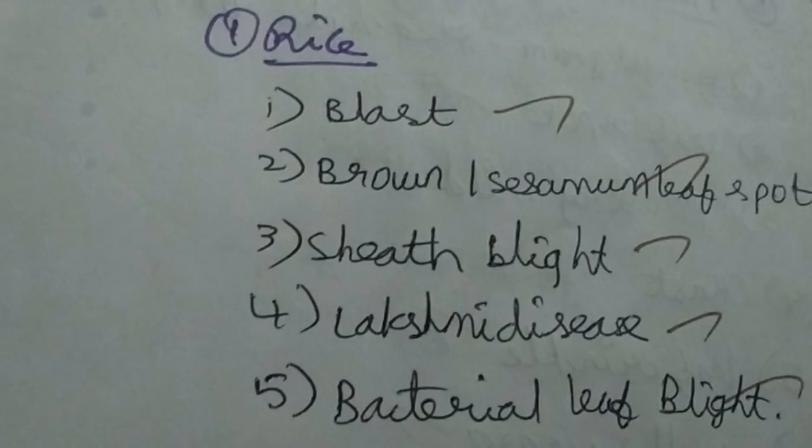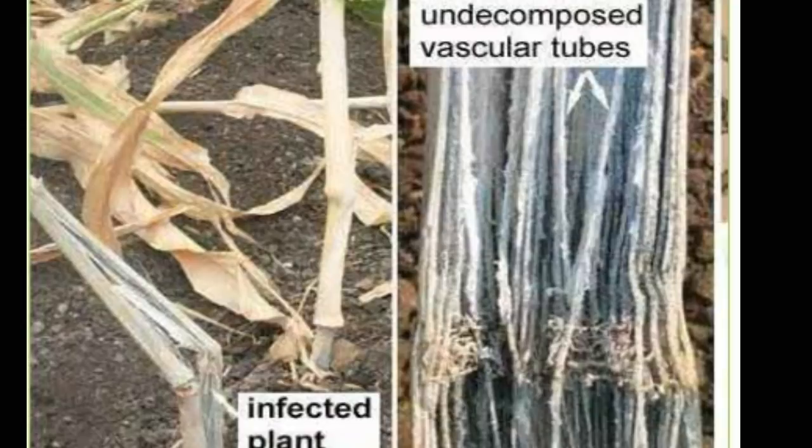In bacterial leaf blight, the leaves show characteristic symptoms — the leaves turn the same color throughout. This is bacterial leaf blight. Next is charcoal rot. In charcoal rot, when the weather is dry, the crop suddenly dries up.